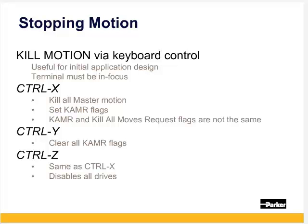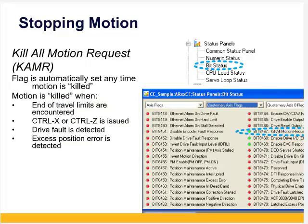Motion is killed any time travel limits are encountered, CTRL X or CTRL Z is issued from the terminal window, a drive fault is detected, or an excess position error is detected. These are shown in the common status panel, or in the bit status, go to axis flags, quaternary axis flags. Bit 8467 is the kill all motion request flag for axis 0.